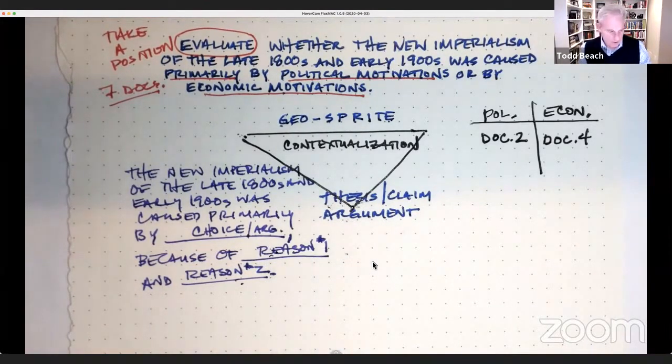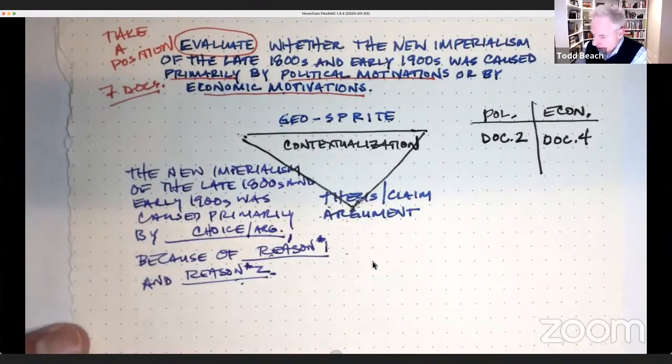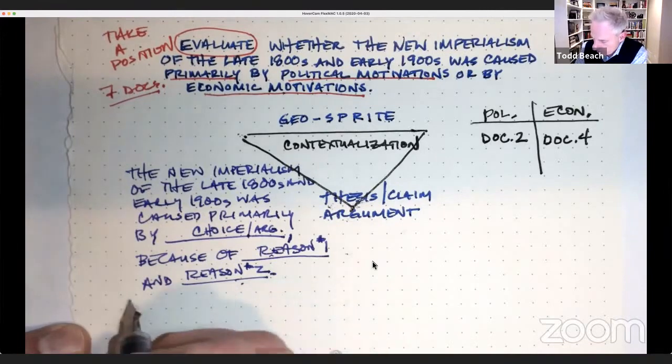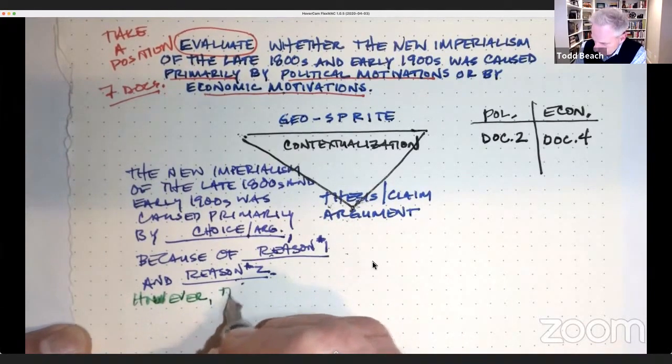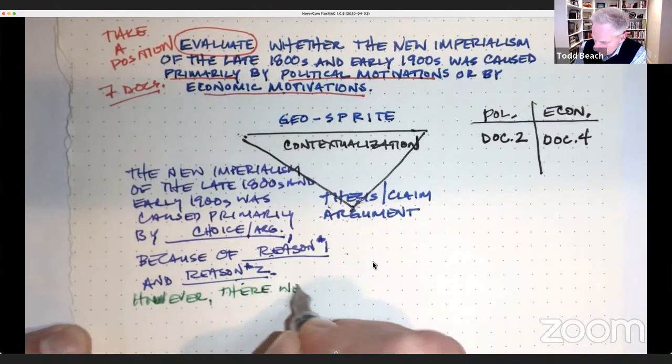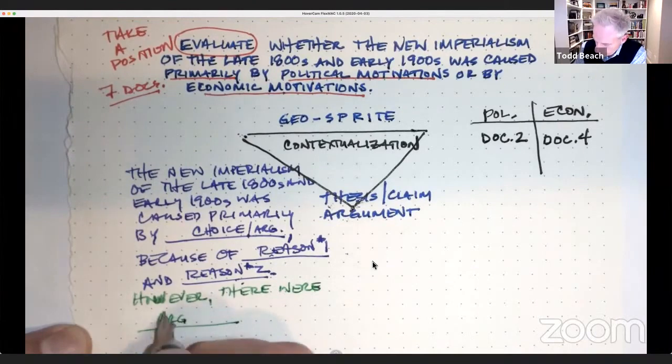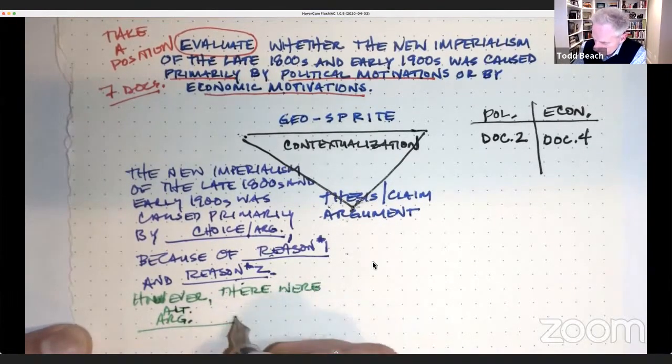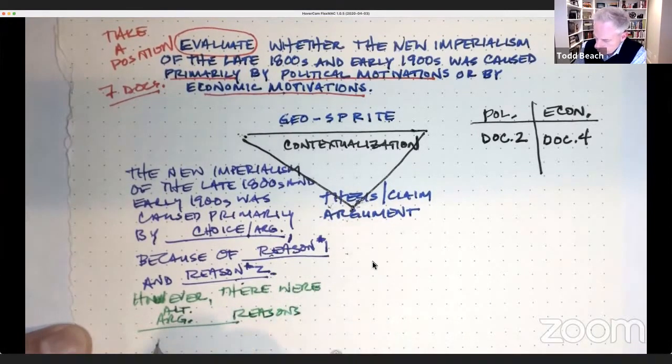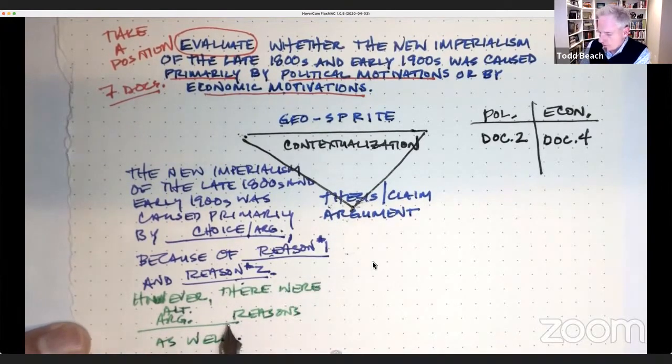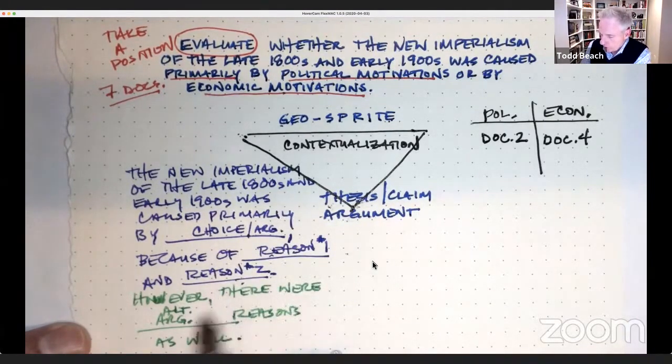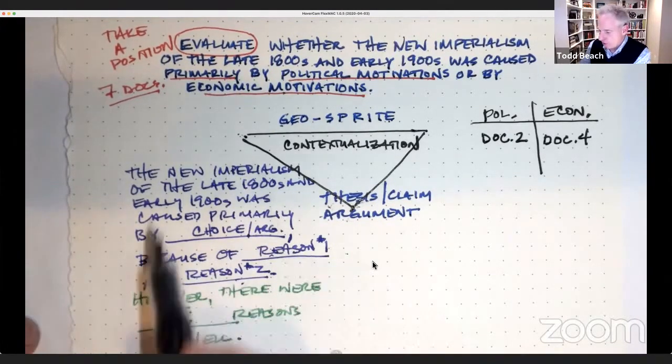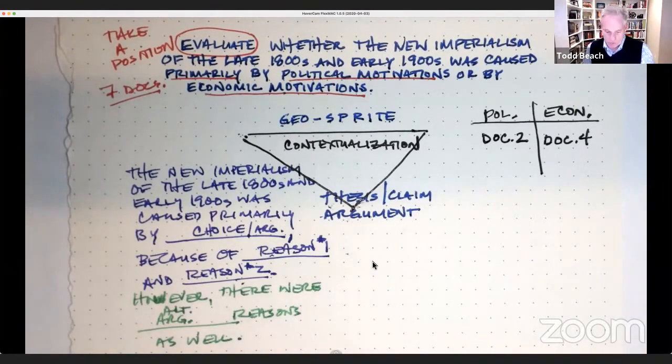The other thing you could do here is we're thinking about complexity, to make an acknowledgement that these are the primary reasons in the position you're taking, but you could also set up a complexity paragraph. However, there were alt argument reasons as well. So if you're choosing politics here, you could put economic motivations here. However, there were economic reasons as well. Does that make sense? This is really important because now it's kind of set up the structure for the rest of your essay.